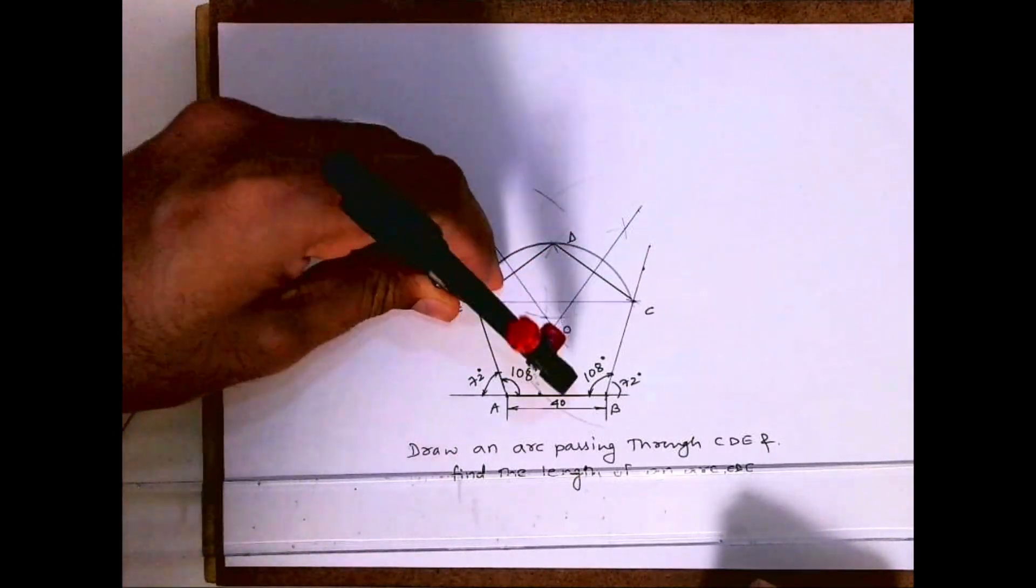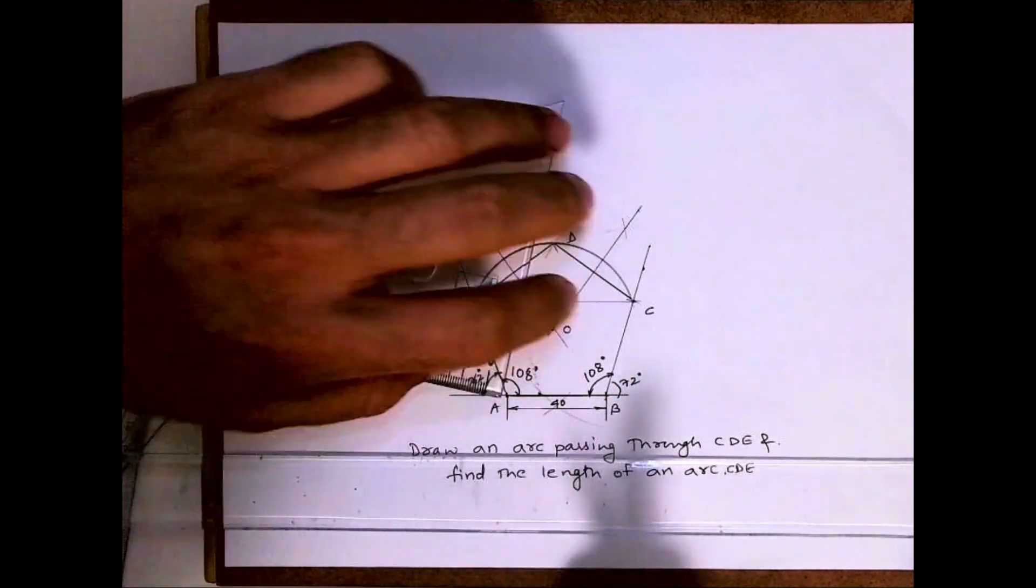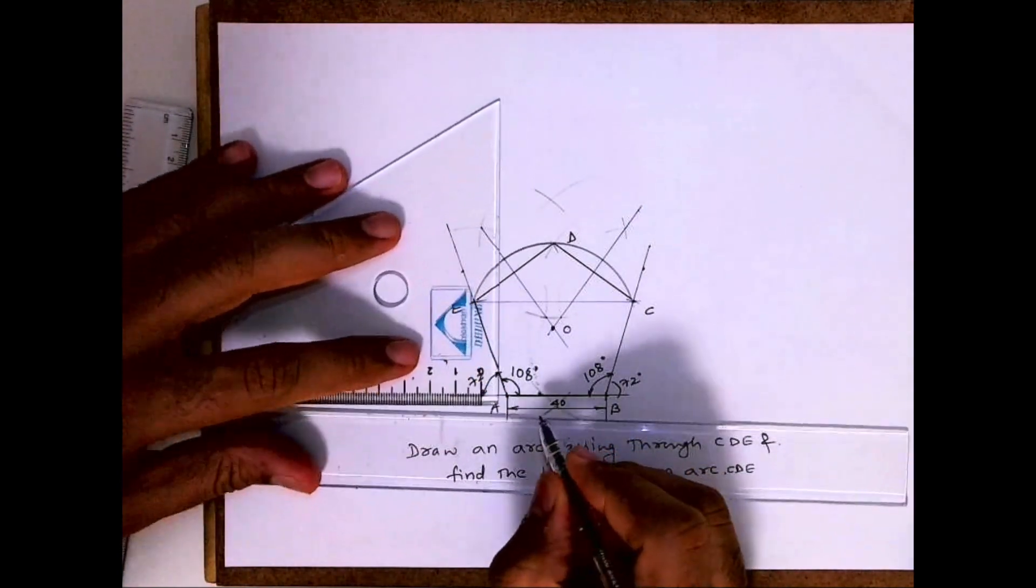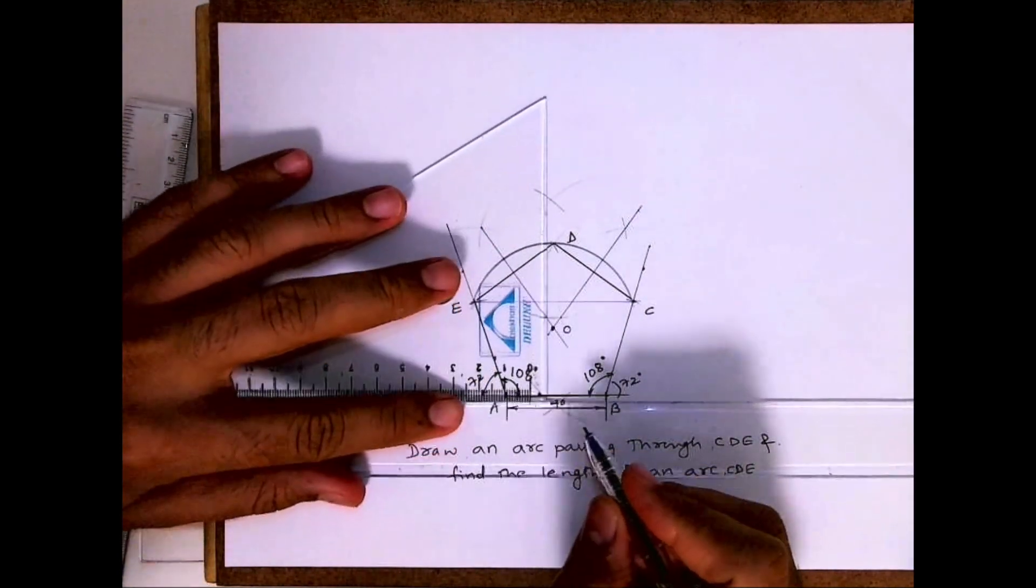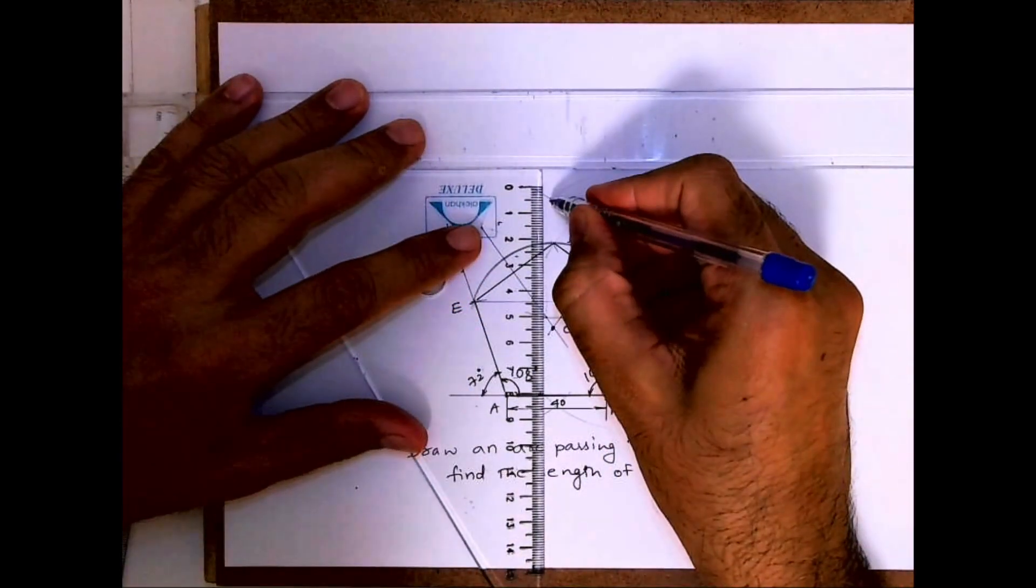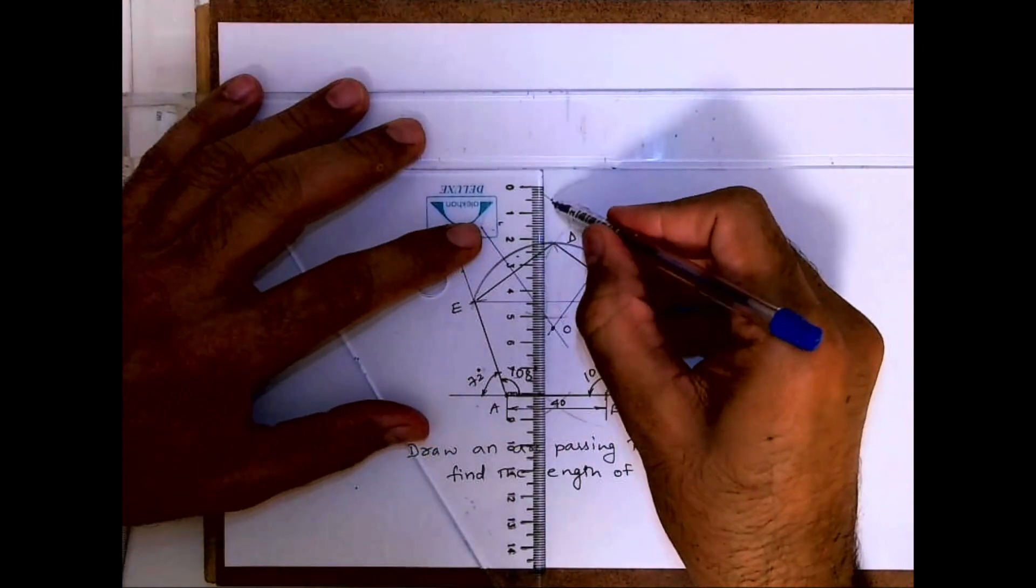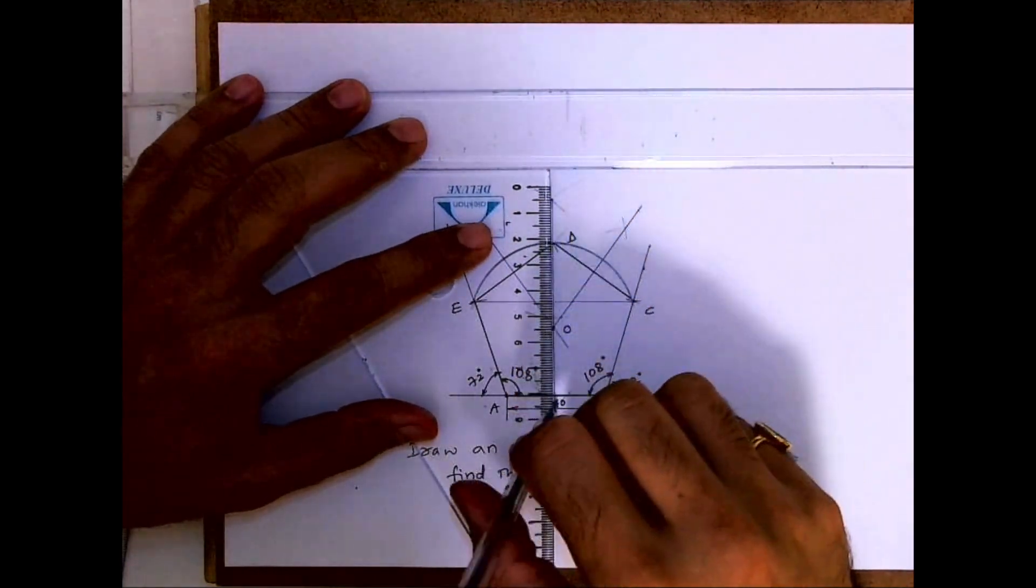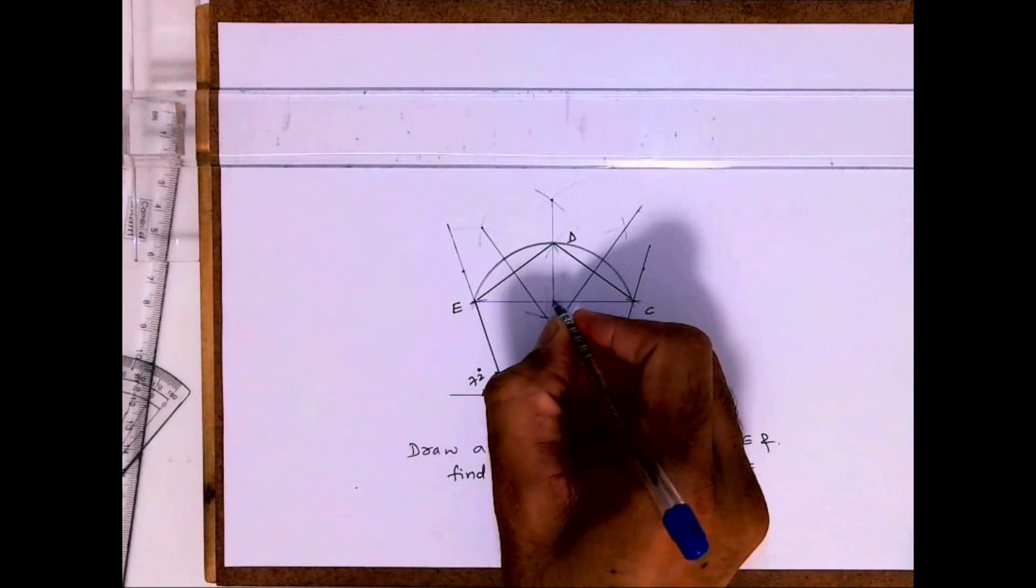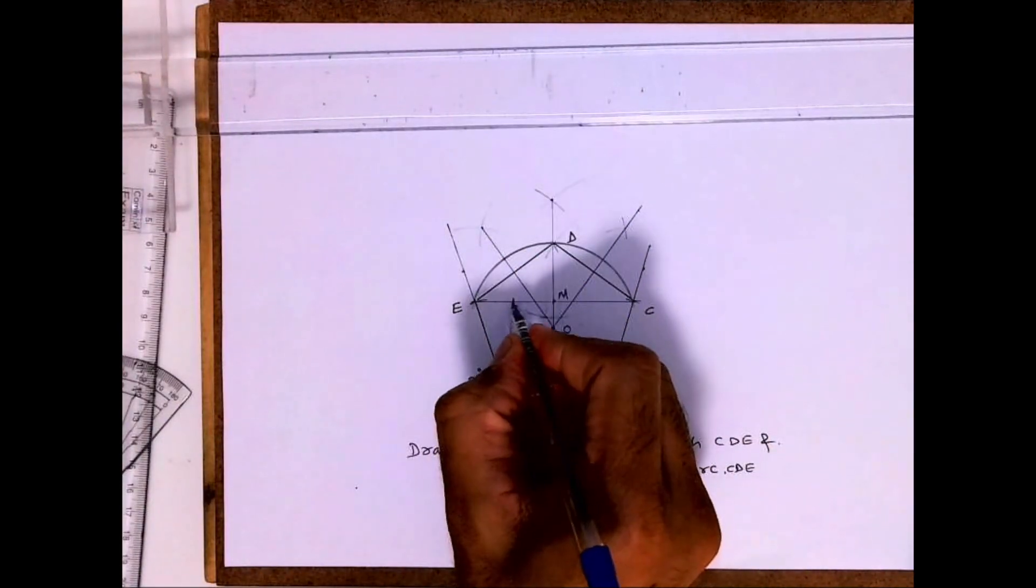I'm showing you the construction. Let's say if you don't have O, or if it is very below or very far. Now see, you draw a line passing through O. Wherever it will cut on line CE, that will be midpoint M.